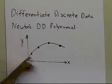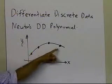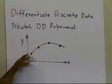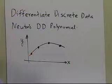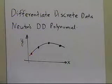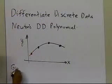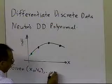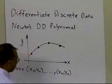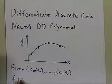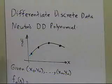If somebody has n data points, you're going to fit an (n minus 1)-th order polynomial through those data points using Newton's divided difference polynomial. Then we all know how to take the derivative of a polynomial — that's pretty straightforward. So somebody gives you x0, y0 all the way up to xn, yn — that's n plus 1 data points — and the Newton's divided difference polynomial, explained in a separate segment, is given by a particular formula.